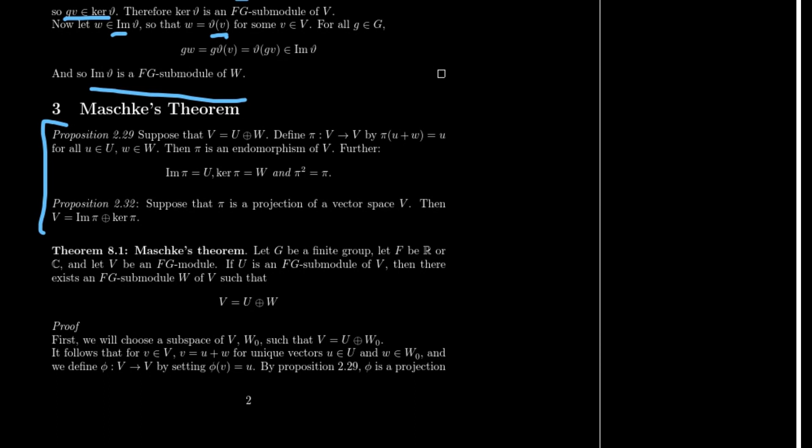To get this off the ground, we're going to need to borrow two propositions from linear algebra. Proposition 2.29 is going to say, suppose that V is a direct sum of the vector spaces U and W and let π be a mapping from V to V by the rule π of U plus V equals U for all U in U and W in W. Just to break this down a little bit, what it's saying is that π is going to take the sum of the two unique vectors of a certain V vector and then just give us back the U one. What we're going to say then is that π is an endomorphism of V and further that the image of π is going to be U and the kernel of π is going to be W and that finally π squared is simply going to be π.